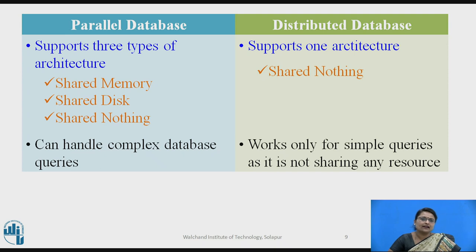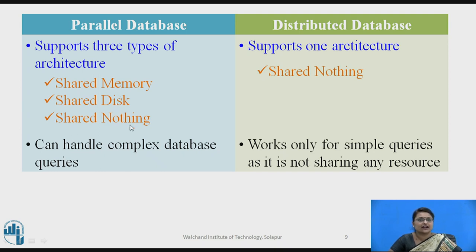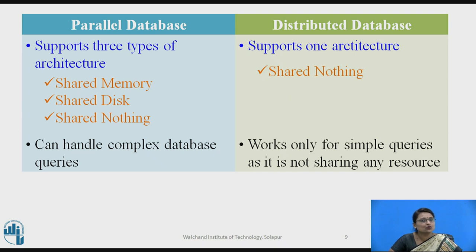In a parallel database, three types of architectures are supported: shared memory, shared disk, and shared nothing. In shared memory, memory is shared; in shared disk, the disk is shared; and in shared nothing, every processor, disk, and memory are independently working. In a distributed database, only one architecture applies — shared nothing — meaning no sites share anything among themselves.